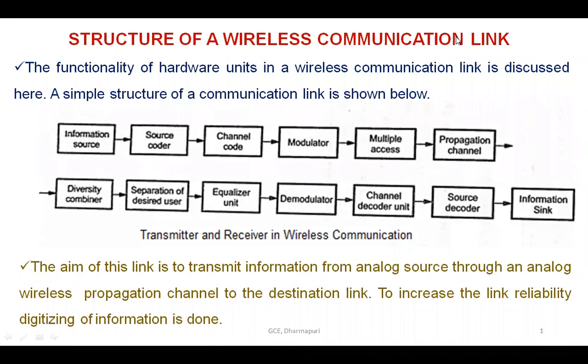The first topic is the structure of wireless communication. The functionality of hardware units in a wireless communication link is discussed here. A simple structure of a communication link is shown, where the top of the link is the transmitter unit and the bottom is the receiver side. The information source is converted through source coder, channel coder, modulator, and finally the propagation channel, and the reverse on the receiver side.